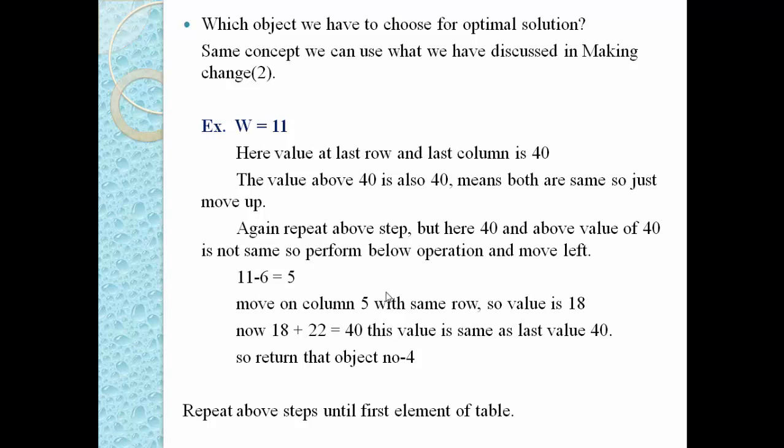The optimal solution is to choose objects 3 and 4 to fill the knapsack. The total weight is 6 + 5 = 11, and the maximum value is 40. This is the complete example showing how to move from bottom to top to find which objects to include. This is all about the zero-one knapsack problem solved using dynamic programming — we fill the table using the recurrence equation, then identify which objects to select to achieve the maximum value within the capacity constraint W. Thank you very much.